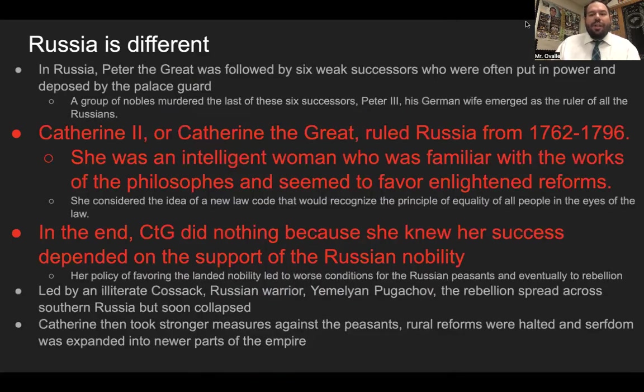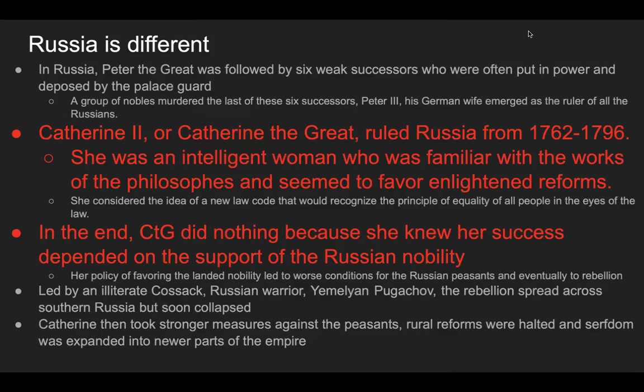Russia was different. After Peter the Great, six weak successors followed, often put in power and then deposed by the palace guard. A group of nobles murdered the last of these six successors, Peter III, and his German wife emerged as ruler of all Russians. Her name was Catherine II, or Catherine the Great, who ruled Russia from 1762 to 1796. She was an intelligent woman, familiar with the works of the philosophes, and seemed to favor enlightened reforms.